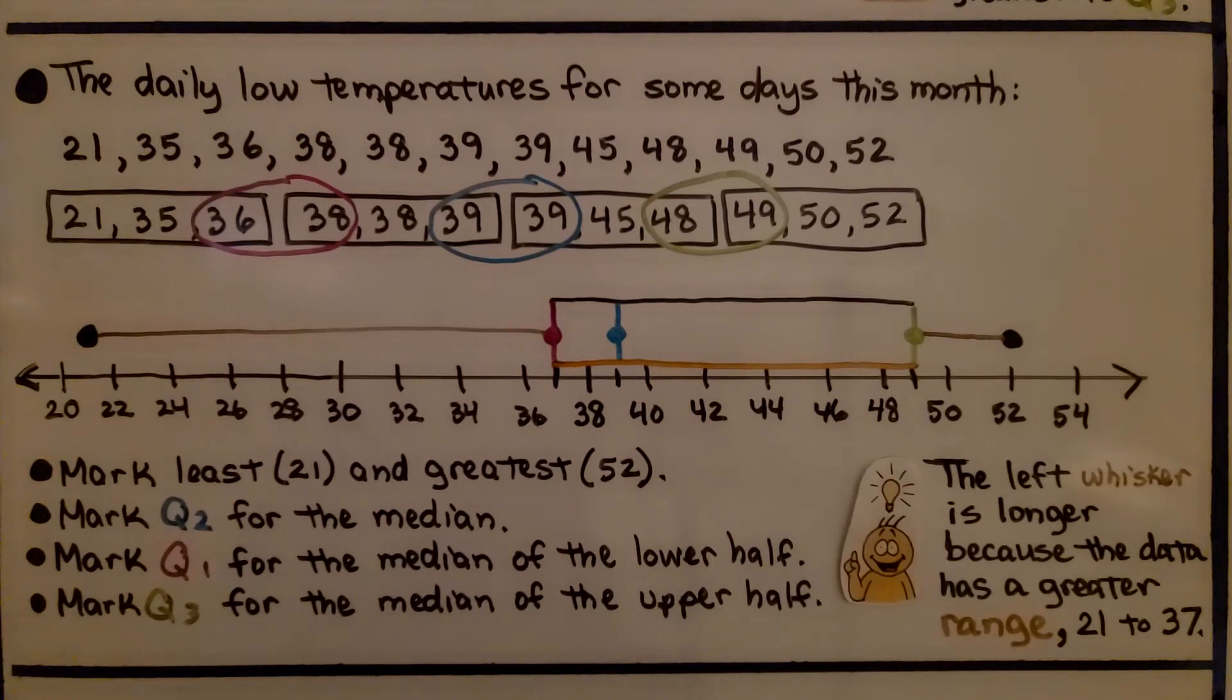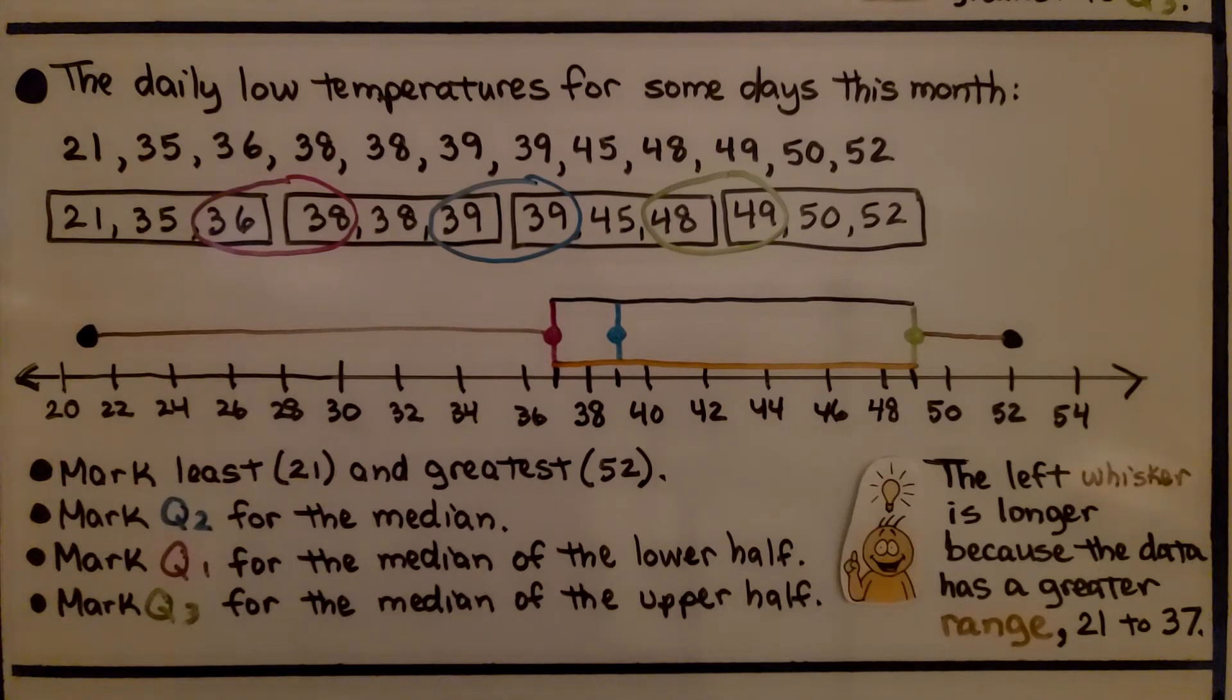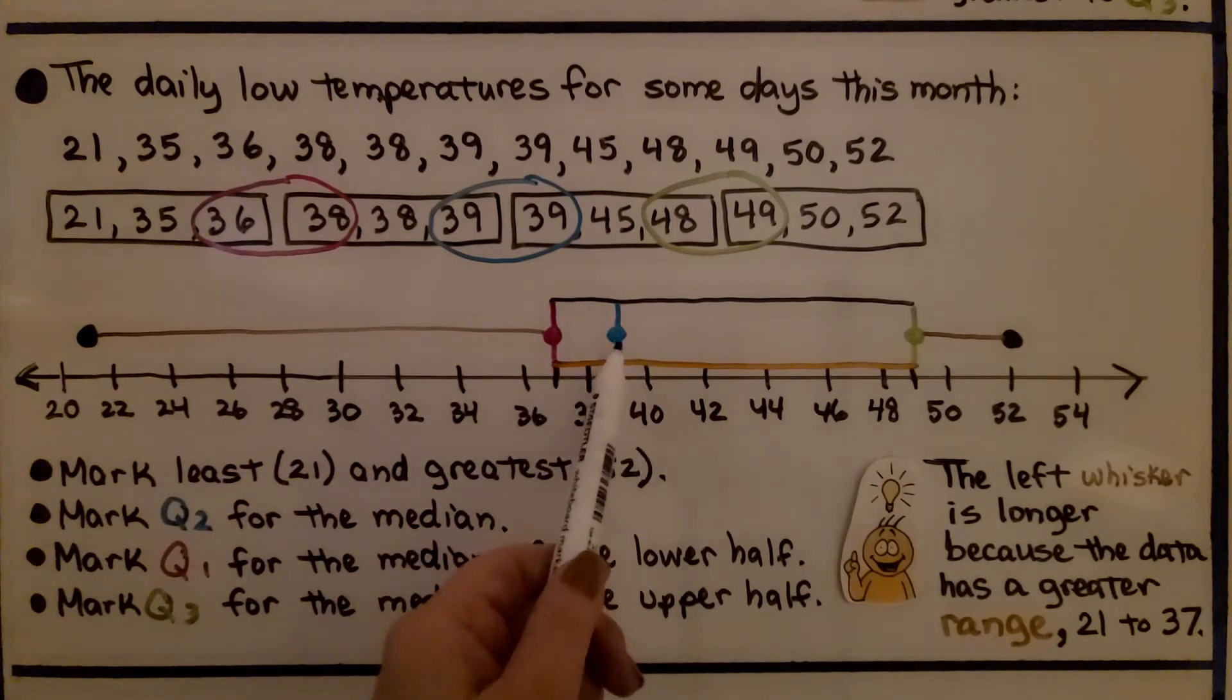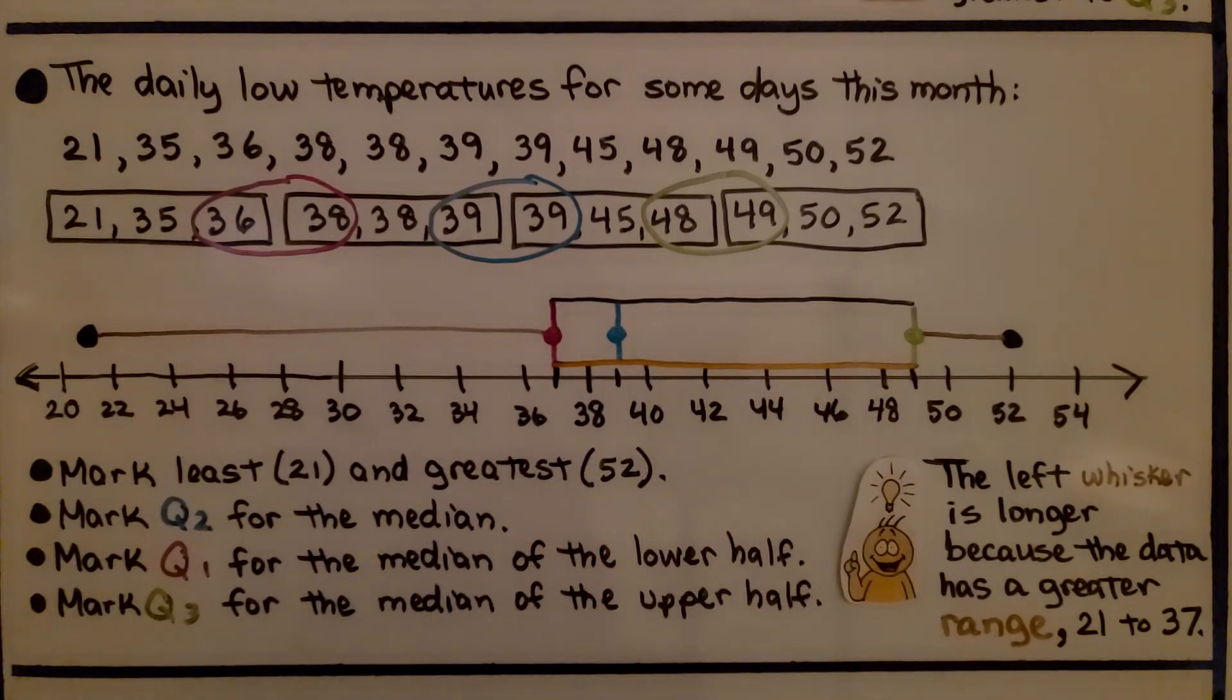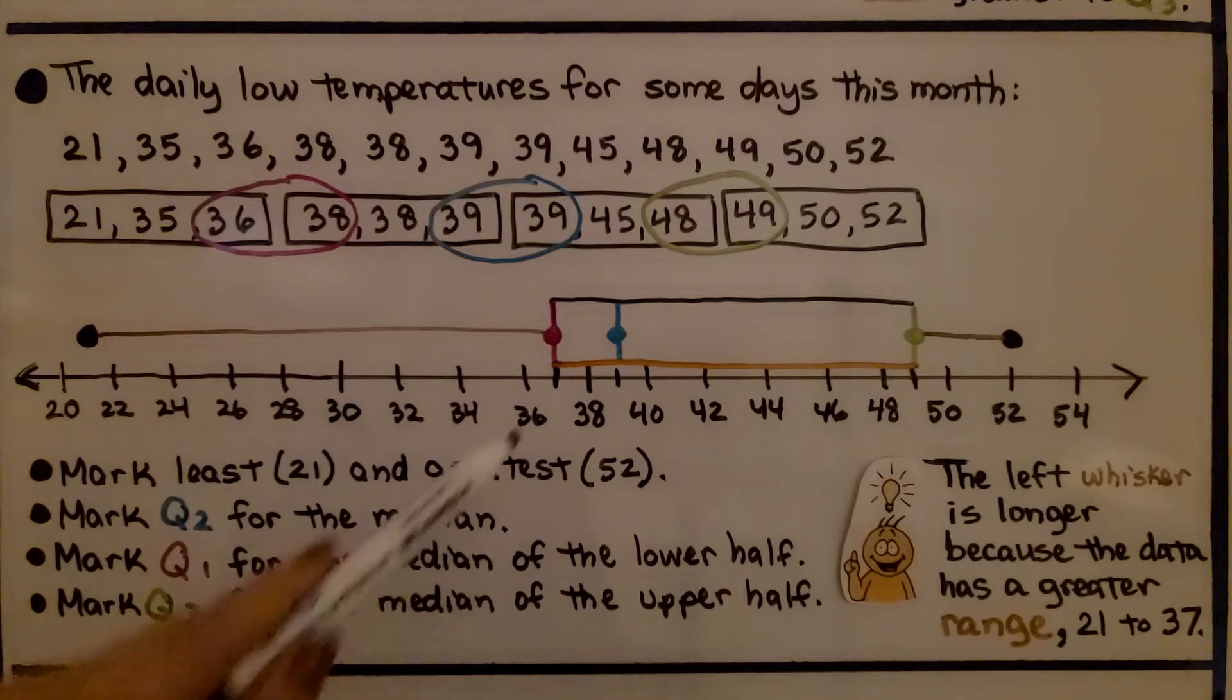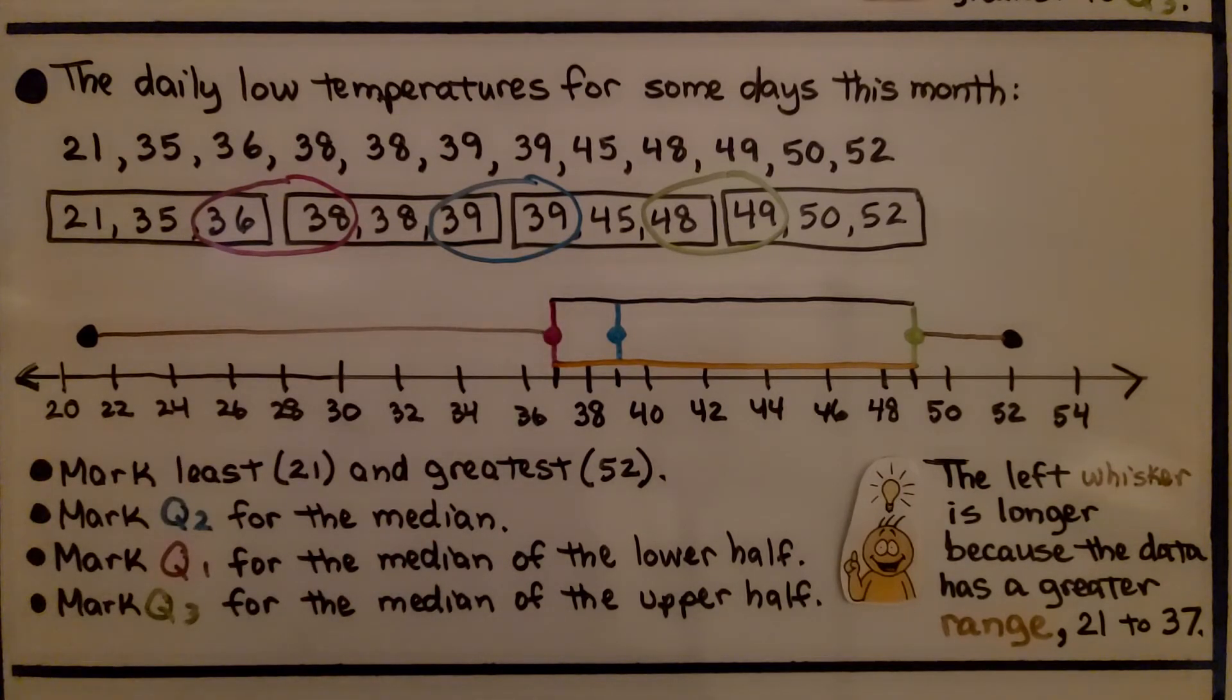And looking at this box plot, we can see between Q1 and Q2, the box is narrower than between Q2 and Q3. Look at how narrow it is here compared to this side. Well, this is because the data to the left of the median over here is not as spread out as the data to the right.